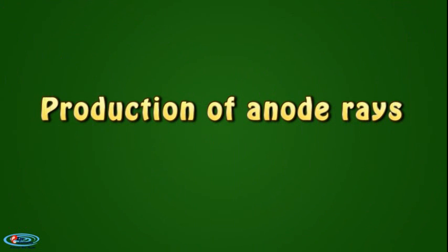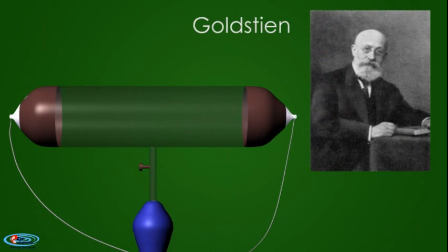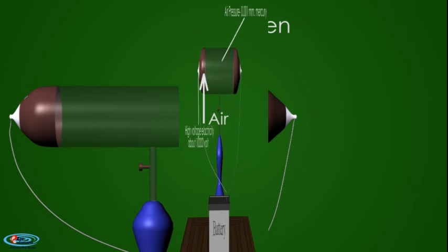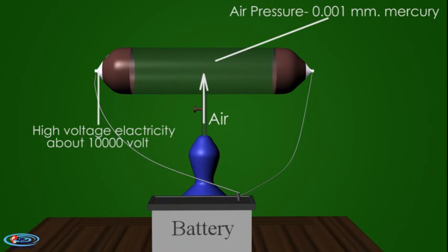Production of anode rays. Goldstein experimentally proved the existence of positive charge in matter. In his experiments, a perforated cathode was used in a discharge tube along with air at very low pressure of about 0.001 millimeters of mercury. When a high voltage of about 10,000 volts was applied to this cathode in the discharge tube, a faint red glow was observed behind the perforated cathode.